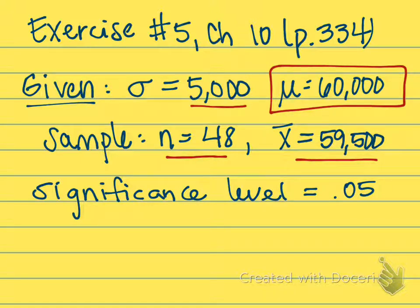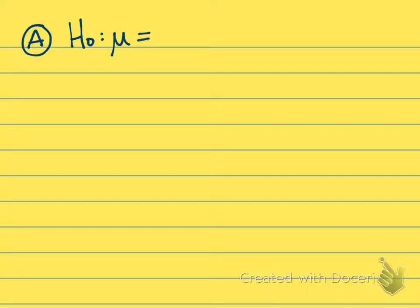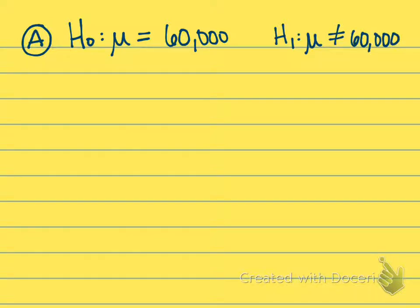We're asked to find out if this company's experience is different from that claimed by the tire manufacturer at a significance level of 0.05. Part A asks us to state the null hypothesis and the alternate hypothesis. Since we're trying to see if it's different, this is a two-tailed test. The null hypothesis is that the population mean equals 60,000 miles, and the alternate hypothesis is that the population mean does not equal 60,000 miles.